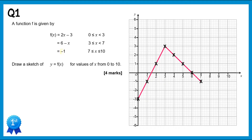In the final part, f(x) equals negative 1 for x values from 7 to 10. We just need a horizontal line through negative 1, giving points (8, -1), (9, -1), and (10, -1). Connect that up and the function is completed.